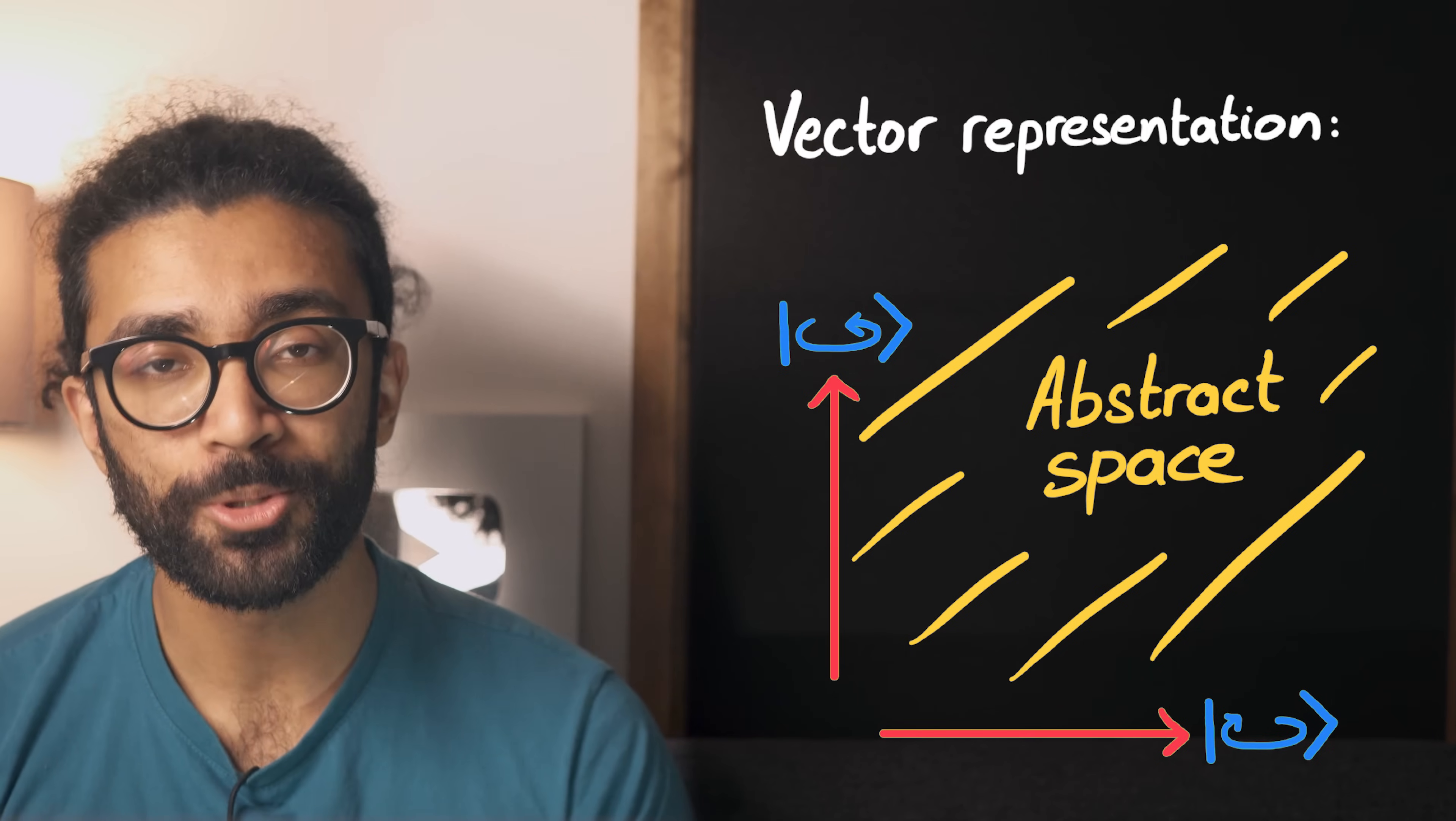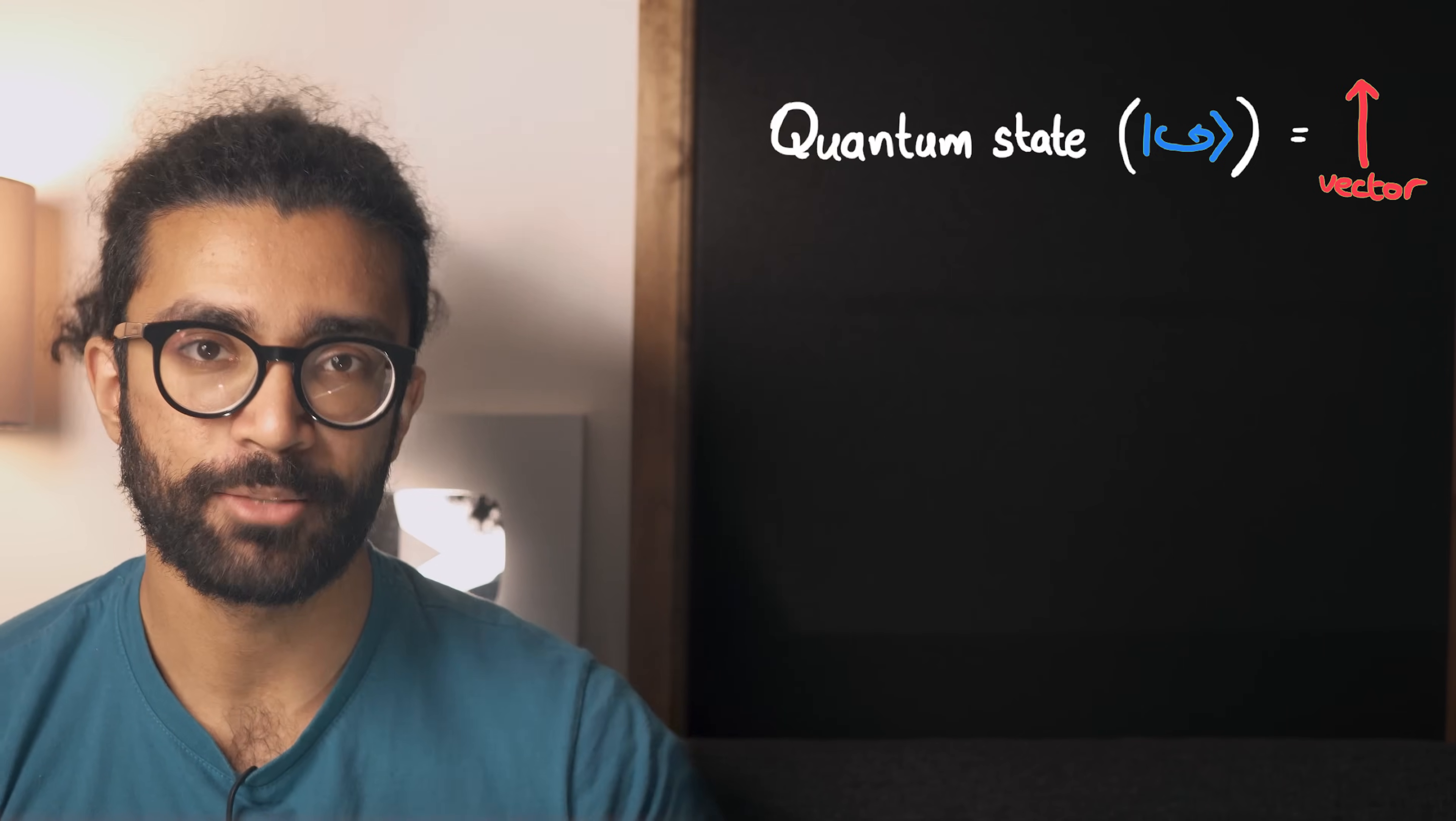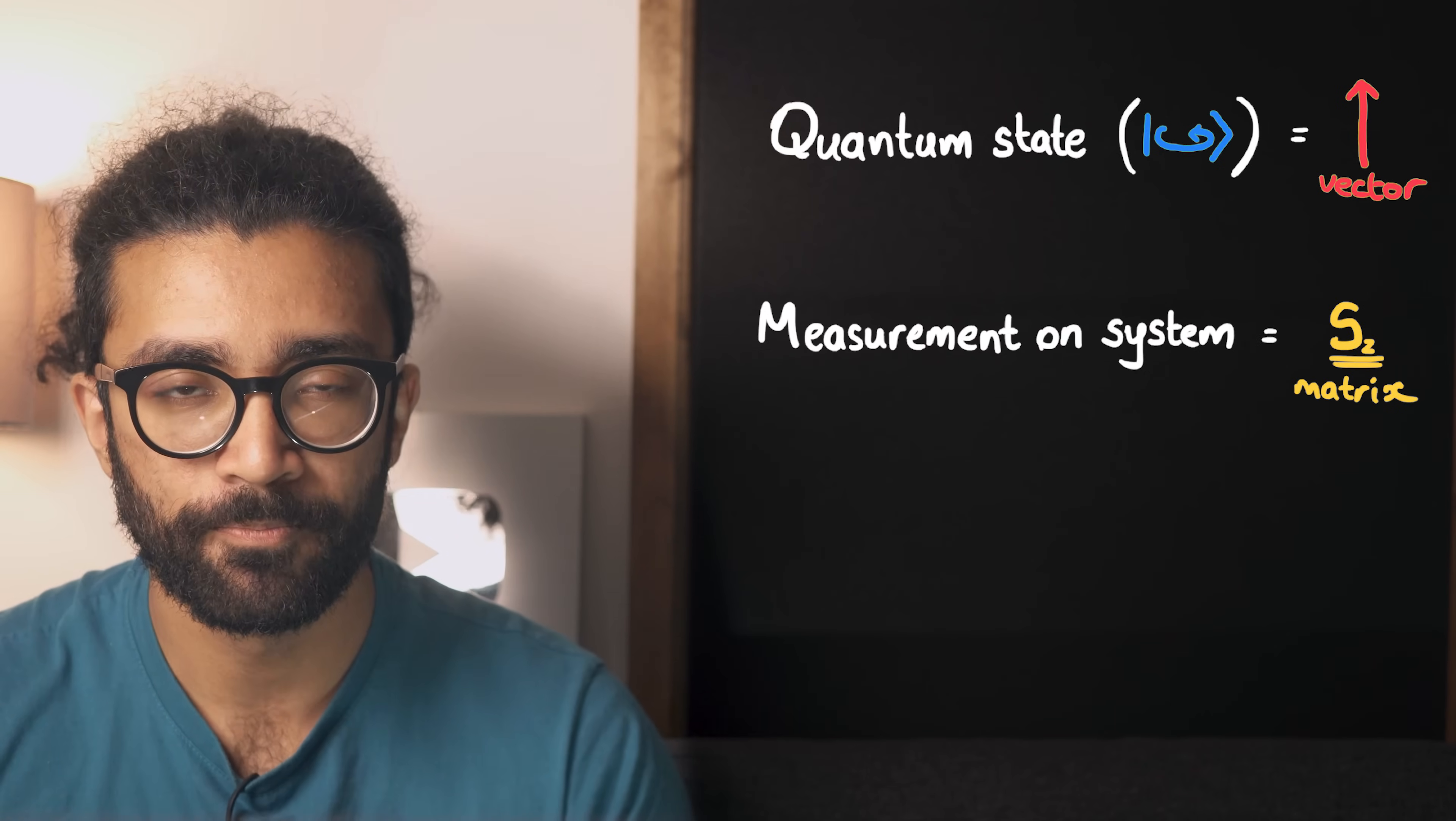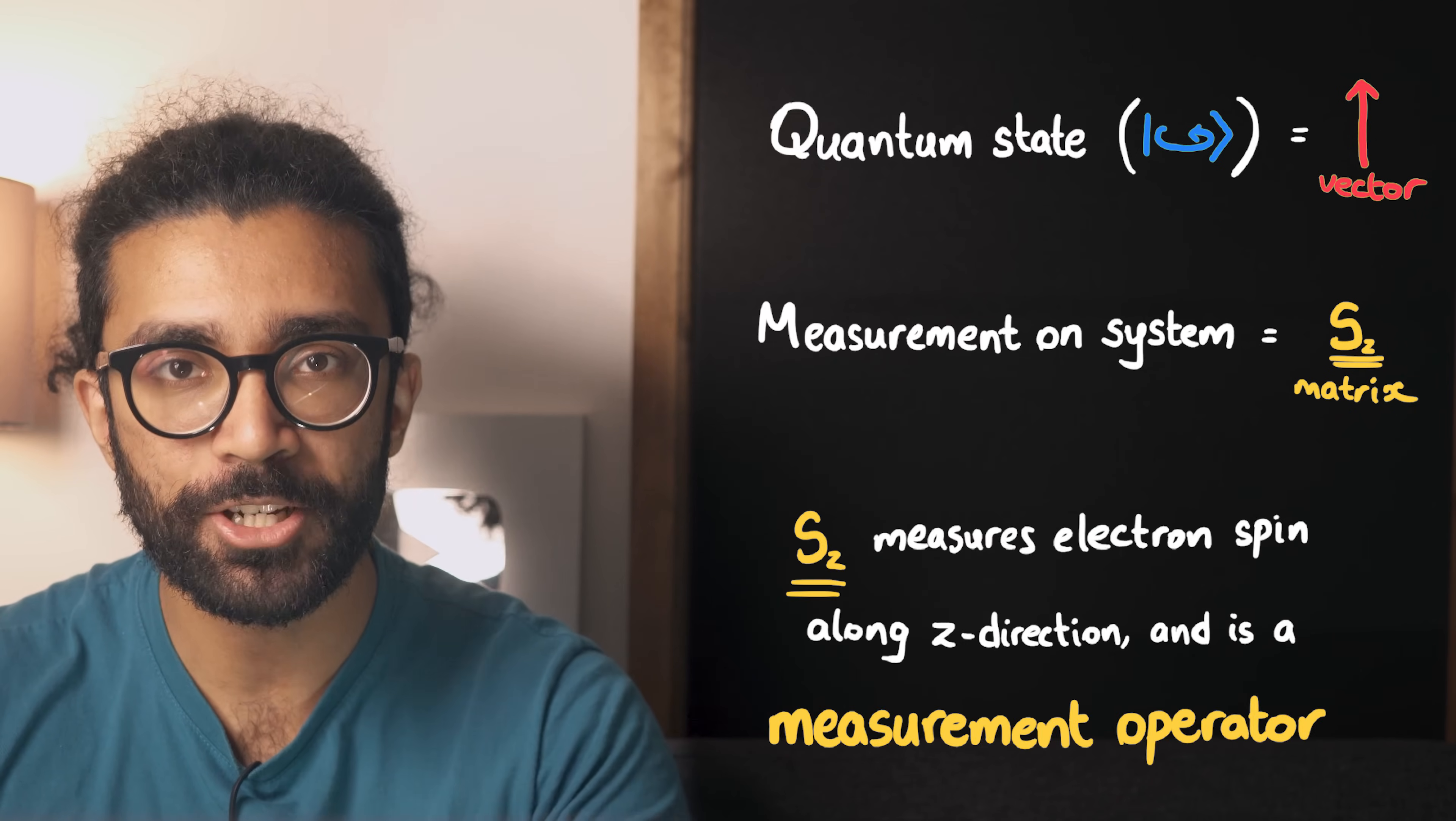Here's why all of this is important, though. If a quantum state can be described just like a vector can, mathematically speaking, then making a measurement of a system can be treated mathematically as a matrix. In fact, in quantum mechanics, these matrices are known as measurement operators.